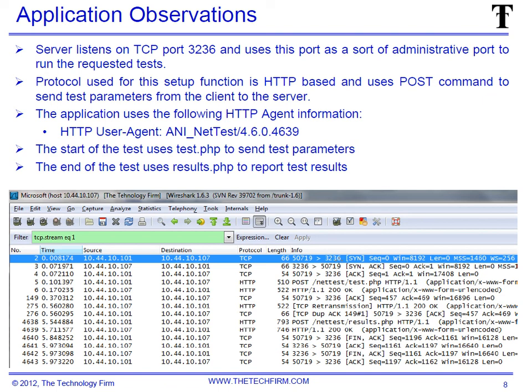One of the parameters you can use on the client side is to change this port number as well as the test port number — so if you want them both to go over port 80, for example, you can do that. I noted that the agent information is 'ani_net_test', which is good to know so if you were filtering and you saw this agent, at least you'd know it's an HTTP client within the PathTest traffic.